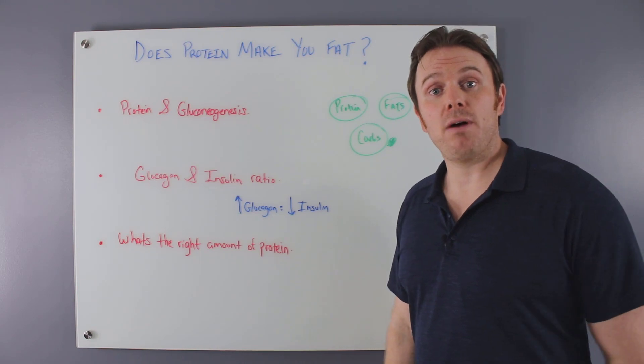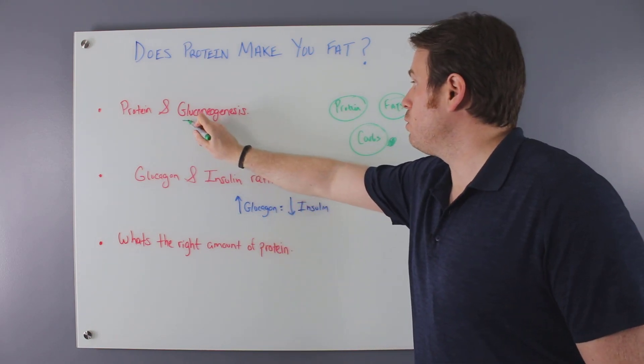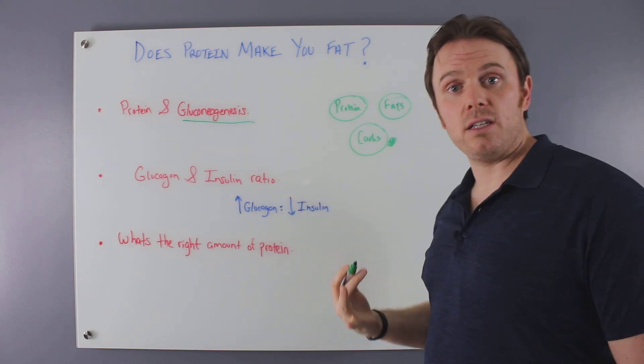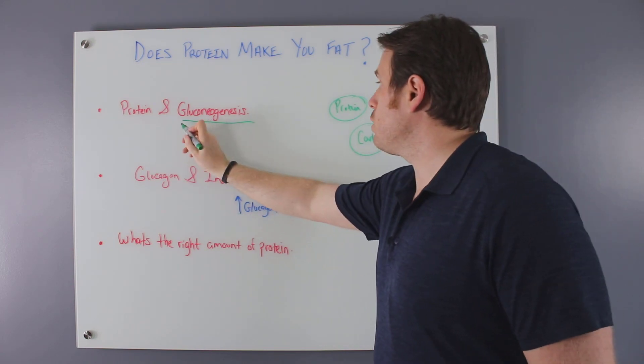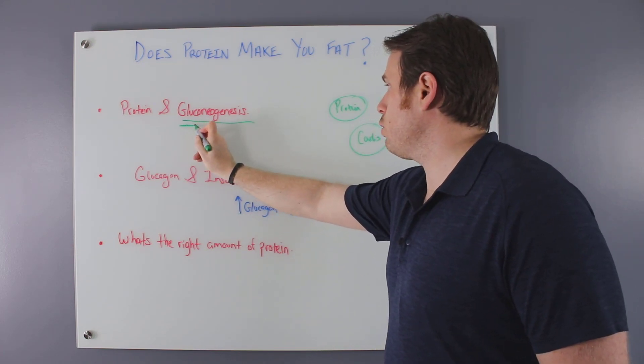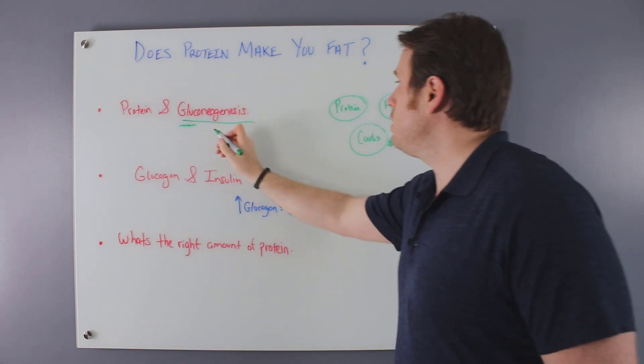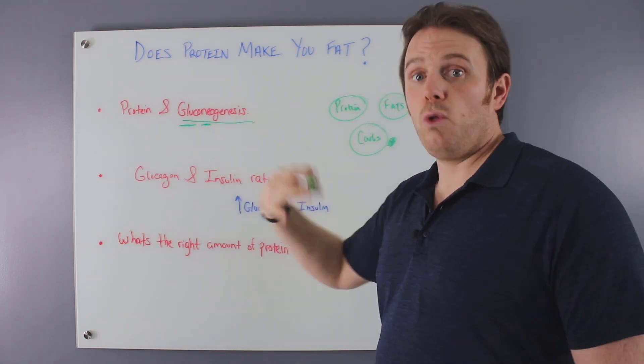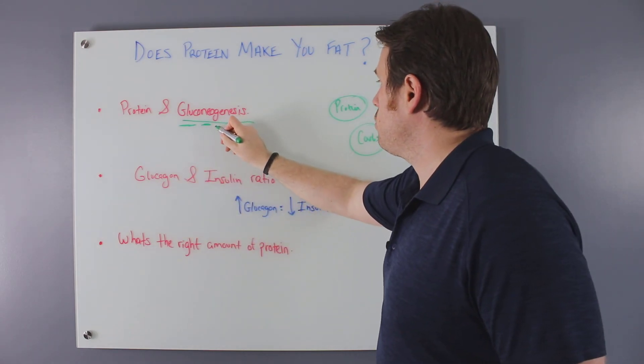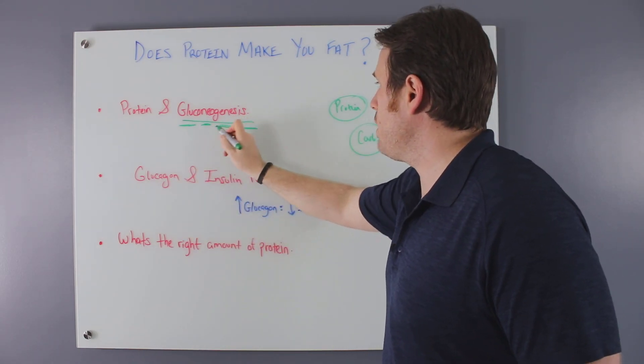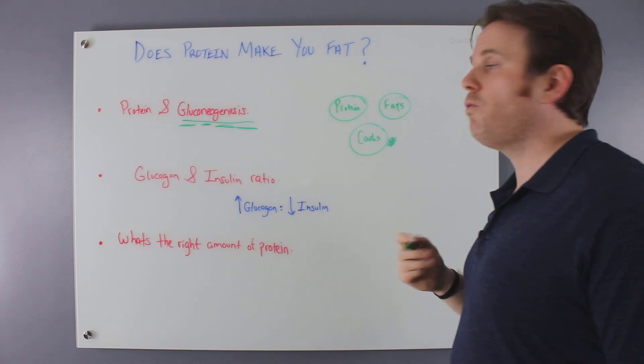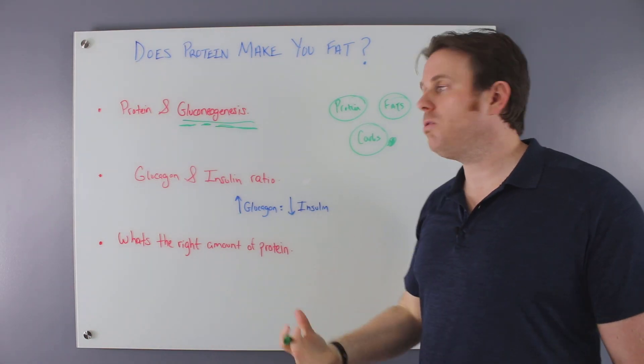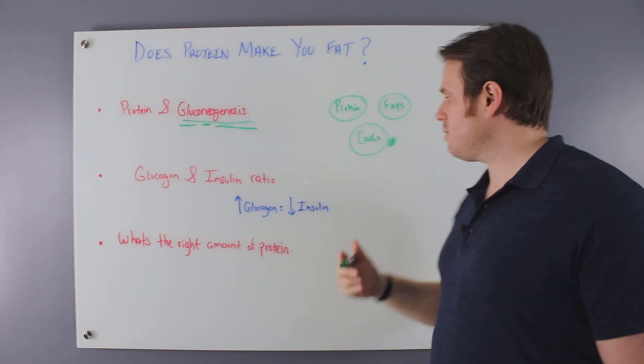Your body can actually make carbohydrate and it does that through gluconeogenesis. You break the word down: gluco meaning blood sugar or glucose, neo meaning to make or new, like new forming, and then genesis is to create. So new formation of glucose, and our body can do that.